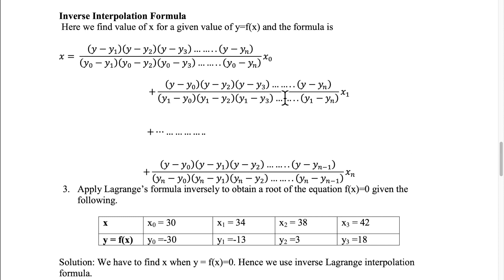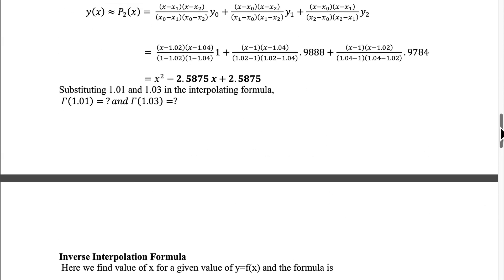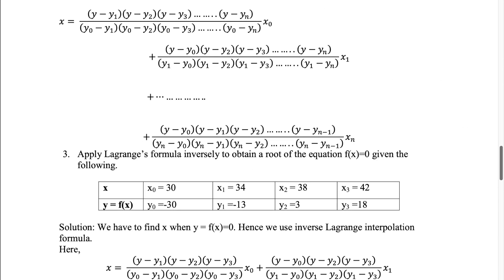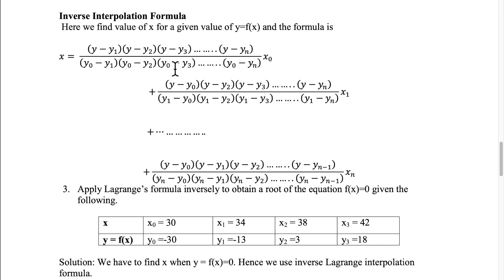Now I will explain one more concept known as inverse interpolation. In the previous problems, we found the value for y in terms of x. Now you can find out the value for x for a given value of y — that is known as inverse interpolation, just the opposite process. We can see the similarity of the formula: all x values are replaced by y and y values are replaced by x. So x is equal to the sum of terms where y minus y1 into y minus y2 etc. up to y minus yn, multiplied by x0, plus similar terms.